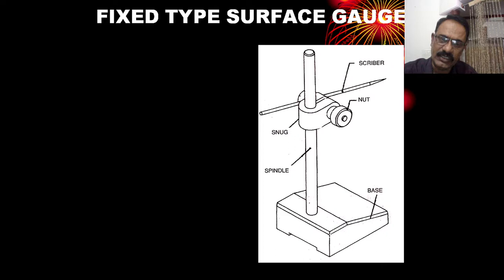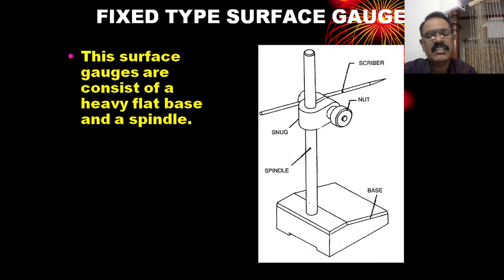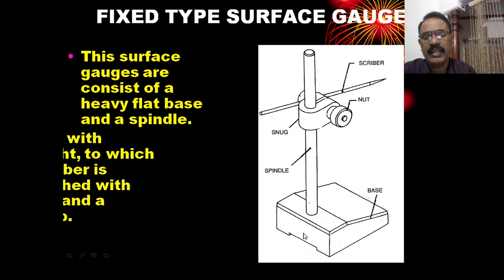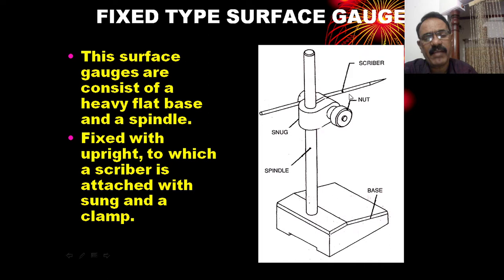The fixed surface gauge consists of a heavy flat base and a spindle. On the flat base is a spindle. It is fixed with an upright to which a scriber is attached with a nut and clamp. This is the scriber.